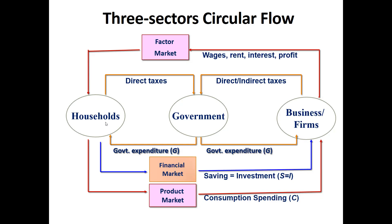Then there is the government. The government imposes direct taxes on households — direct tax means income tax and property tax. Households pay this tax to the government, so revenue income moves from household to government. But the government also makes expenditures towards households in the form of building parks, bridges, and roads. This is government expenditure reaching towards the household — for example, labor working in road or bridge construction receives this money, so the government is transferring money to the household.